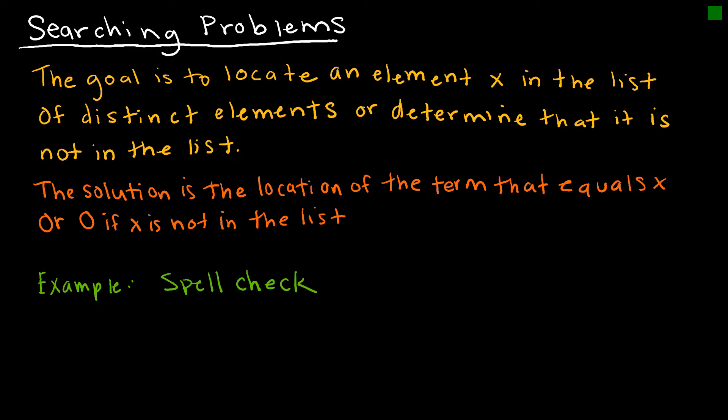So our solution is the location of the term that equals the value that we're looking for, or our solution is 0 if it is not on the list. An example here would be spellcheck. Spellcheck essentially looks through all of your items in the list, compares it to the dictionary, and then the output is it's going to put that squiggly little red line over something that is not spelled correctly, or it's not going to do anything if everything is spelled correctly.